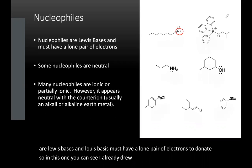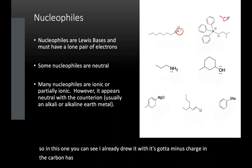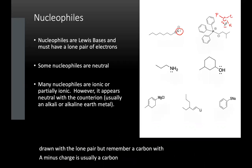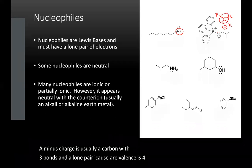Sometimes it's not drawn with the lone pair, but remember a carbon with a minus charge is usually a carbon with three bonds and a lone pair, because our valence is four minus three bonds minus the two. So this minus is really a carbon with a lone pair, so this carbon right here.